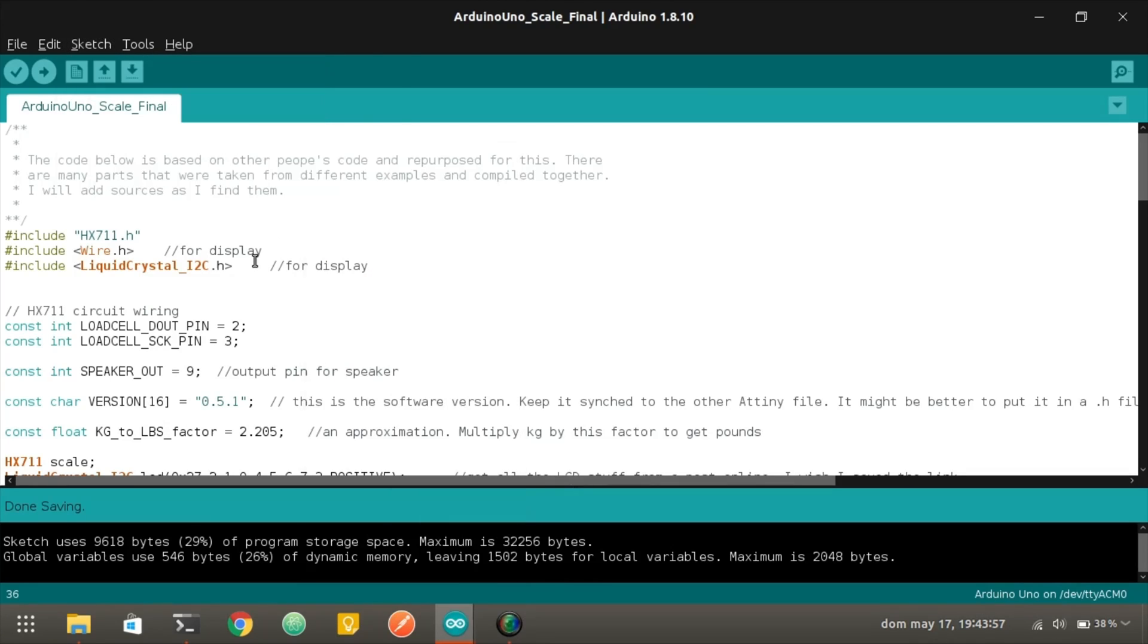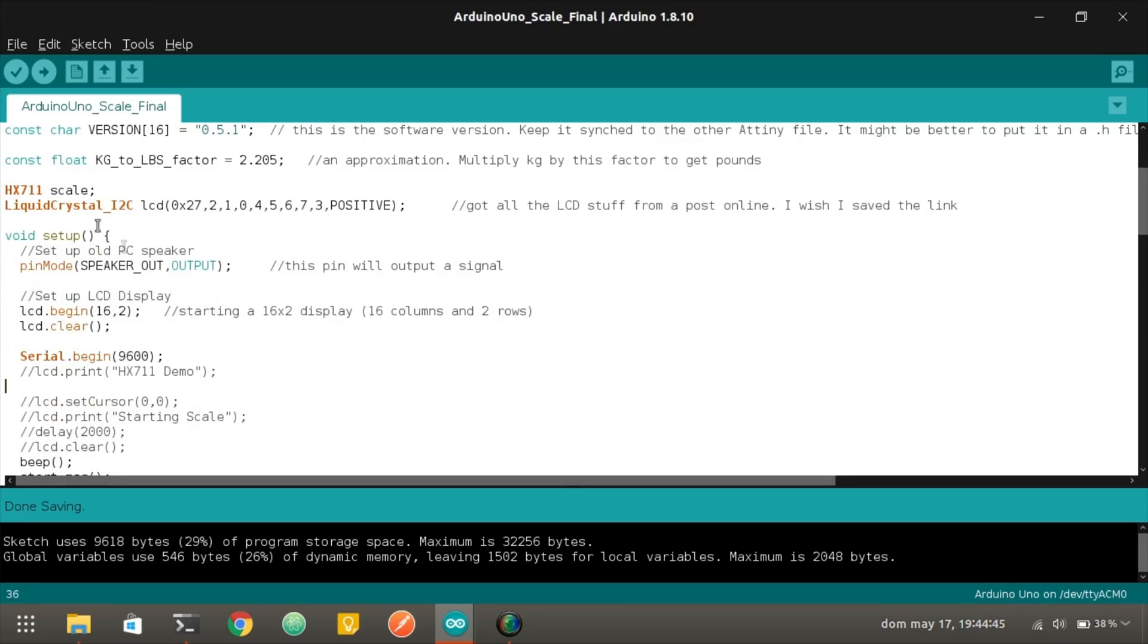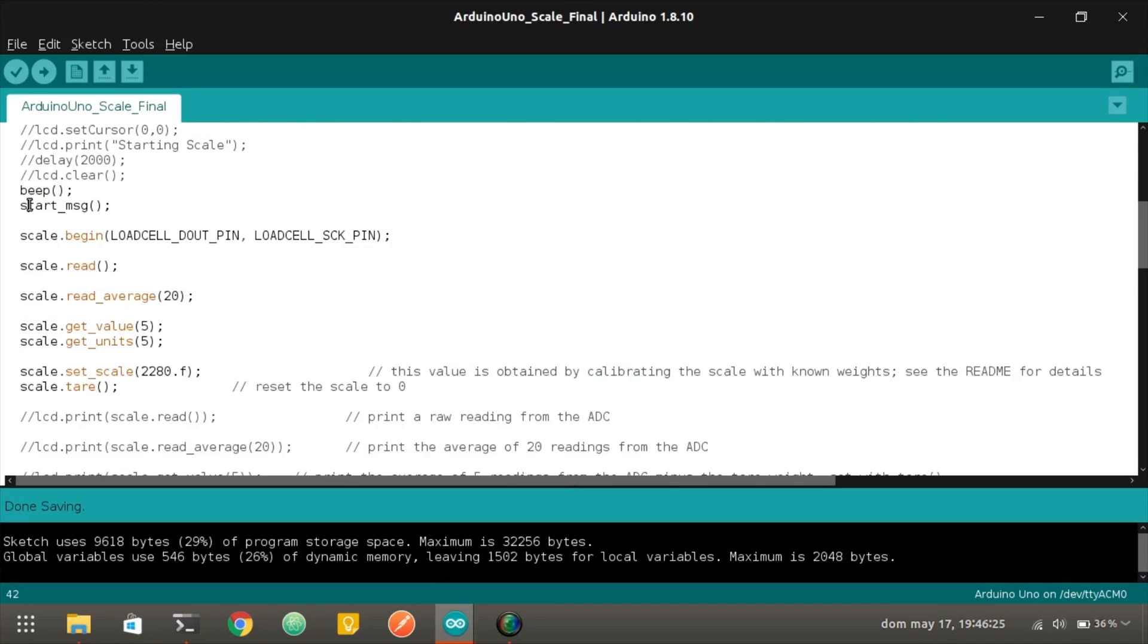The next part defines the pins that we'll be using in the Arduino board. The HX711 module will connect to digital pins 2 and 3 from the Arduino. Here we are initializing the HX711 library and the Liquid Crystal library. This hex value is the address we found with the I2C scanner code. The setup function contains calls to a startup message function, which writes to the LCD screen. There are also initialization steps for the sensors, which I copied from one example from the HX711 repository.